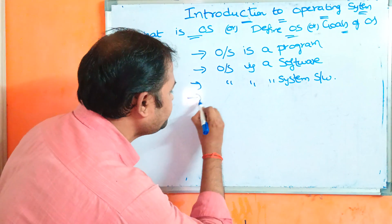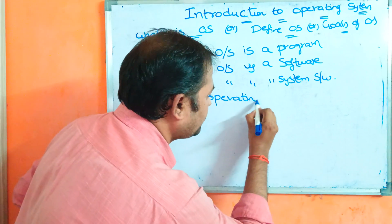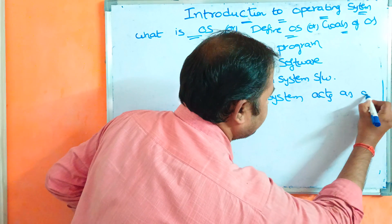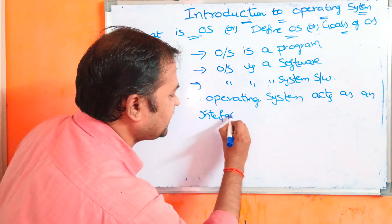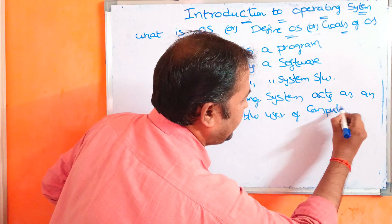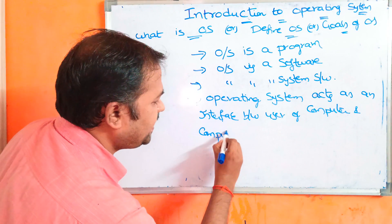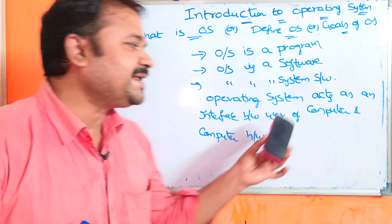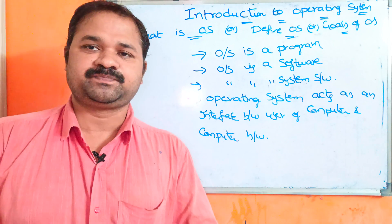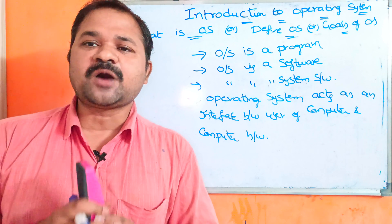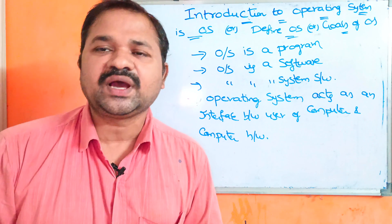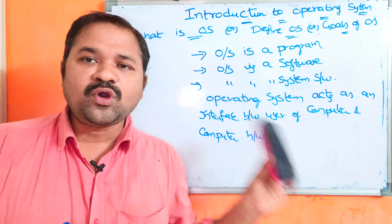Now let us see the definition of an operating system. The most commonly used definition is: an operating system acts as an interface between the user of the computer and the computer hardware. Without installing the operating system we can't do anything in the computer — a computer is a dummy component without an operating system. We can perform activities in the computer only by installing the operating system.